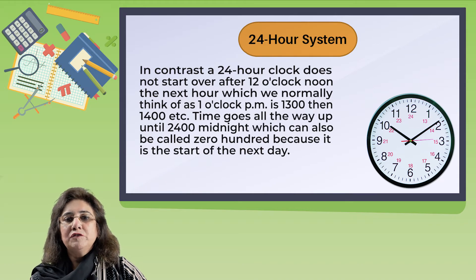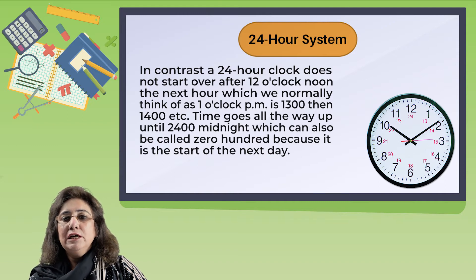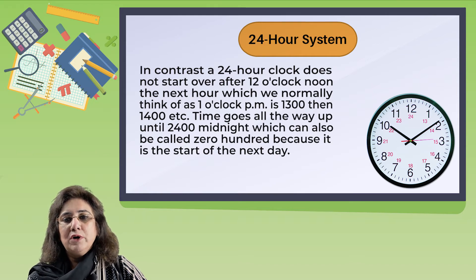On a 24-hour clock, the next hour after noon — which we normally think of as one o'clock PM — is 1300, then 1400, and so on. Time goes all the way up until 2400 midnight, which can also be called zero hundred because it is the start of the next day.